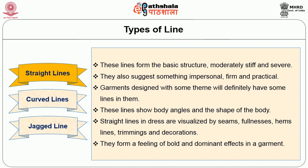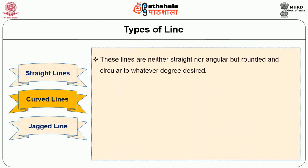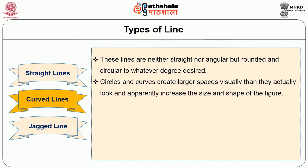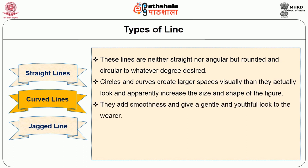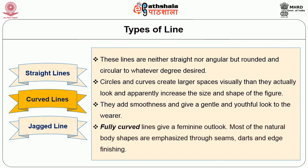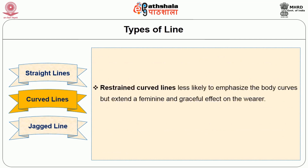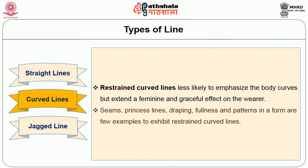Straight lines form a feeling of bold and dominant effects in a garment. The second one is a curved line. These lines are neither straight nor angular but rounded and circular to whatever degree desired. Circles and curves create larger spaces visually than they actually look and apparently increase the size and shape of the figure. They add smoothness and give a gentle and youthful look to the wearer. Fully curved lines give a feminine outlook. Most of the natural body shapes are emphasized through seams, darts and edge finishing. Restrained curved lines are less likely to emphasize the body curves but extend a feminine and graceful effect on the wearer. Seams, princess lines, draping, fullness and patterns are few examples to exhibit restrained curved lines.